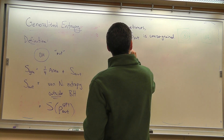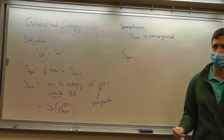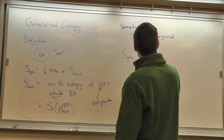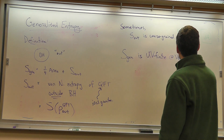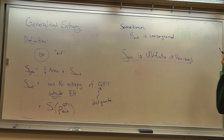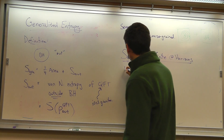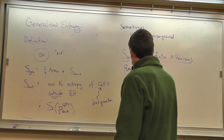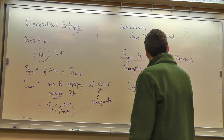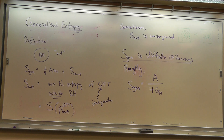The most interesting — a very interesting — property of the generalized entropy is that the generalized entropy is UV finite at horizons. S_gen is A over 4G_Newton. When I wrote the formula earlier I had set G_Newton to 1, so let me put back in that G_Newton. Plus S_out.